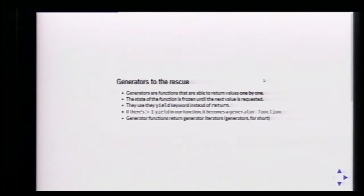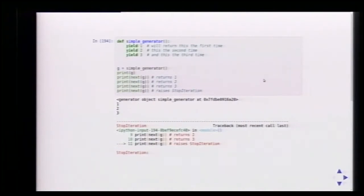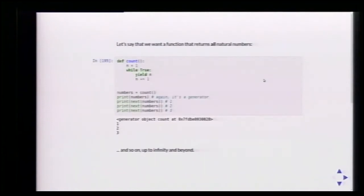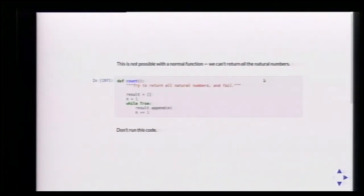If we have one or more yields in our function, it's not a normal function anymore — it becomes a generator function returning a generator iterator, which for short we call a generator. For example, a simple generator using yield can be called up to three times, returning values one by one. We can even have an endless loop inside a generator — it's never going to cause a problem because we return elements one by one.